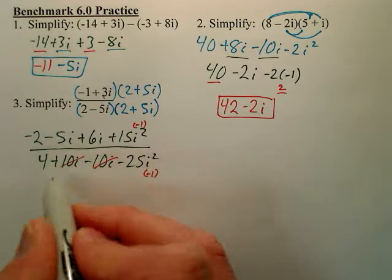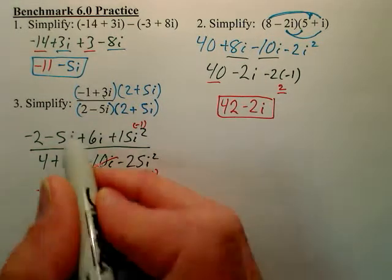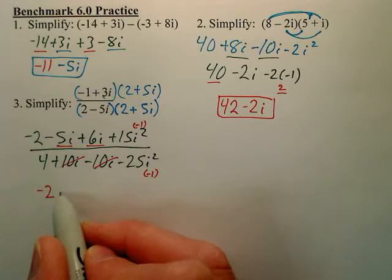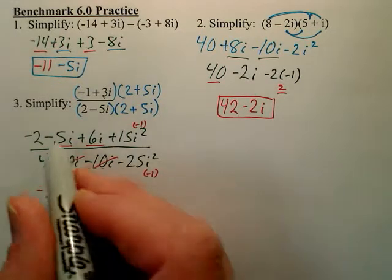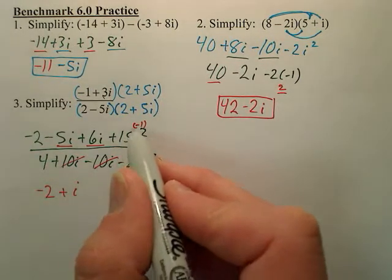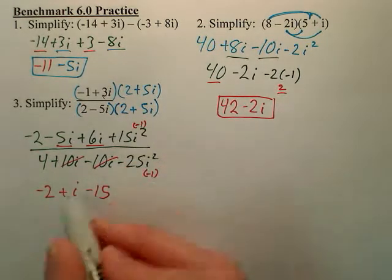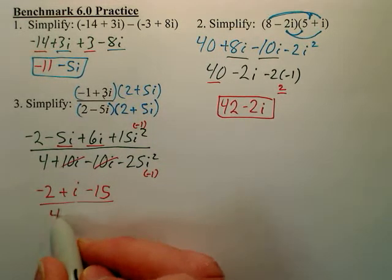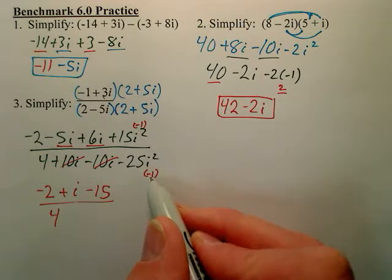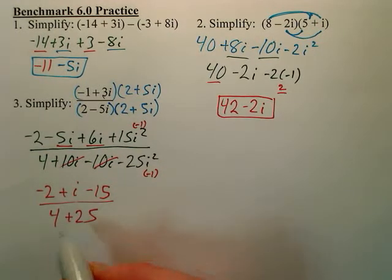So basically on top, we're left with negative 2. These two combine to be a positive i. This becomes 15 times negative 1, which becomes negative 15. On the bottom, we're left with a 4. This becomes negative 25 times negative 1, which becomes positive 25.